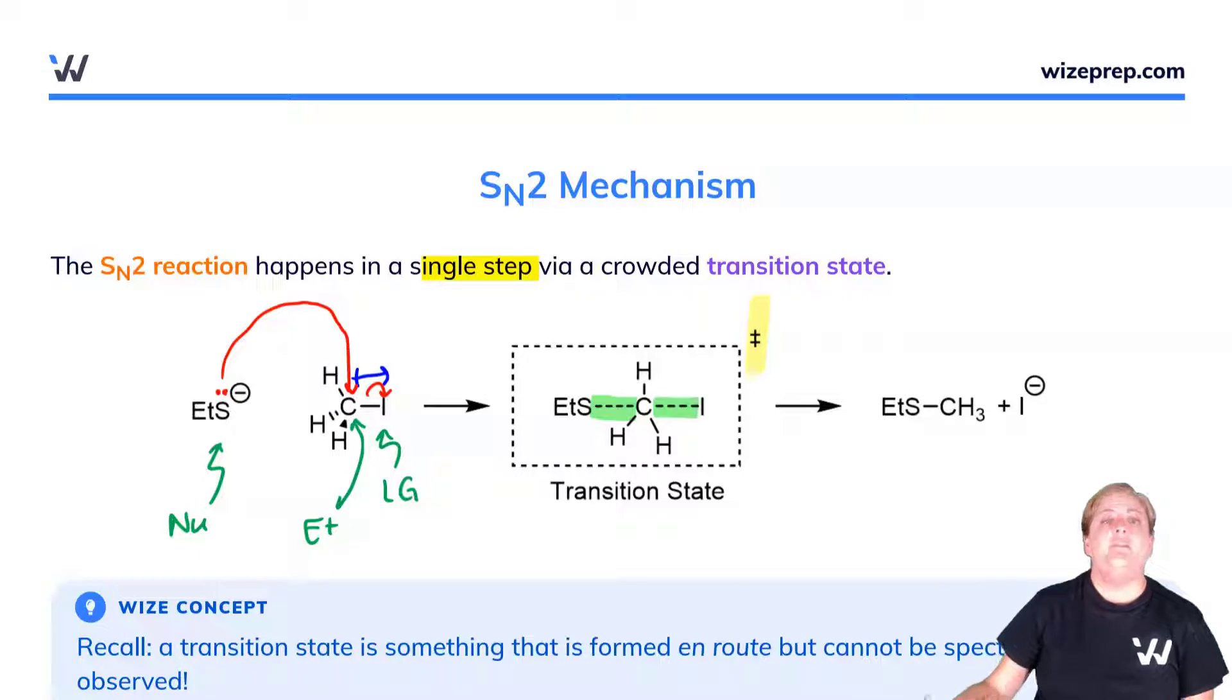You will notice that carbon, which is a small atom, is being asked to accommodate a lot of atoms here—both the nucleophile and the leaving group, as well as everything else it was bonded to at the start.